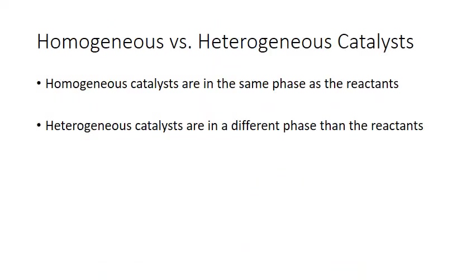Catalysts come in two forms: homogeneous catalysts and heterogeneous catalysts. A homogeneous catalyst is in the same phase as the reactants. The chlorine radical in ozone destruction is a good example — both the chlorine radical and the ozone are in the gas phase. Homogeneous catalysts work by reacting with one of the reactant molecules to form a more stable activated complex with a lower activation energy.